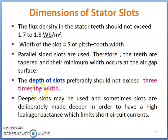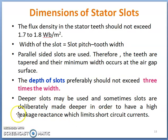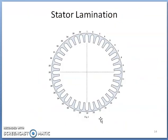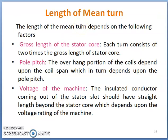The depth of the slot should not exceed three times its width. When deeper slots are used, leakage reactance becomes very large, which limits short-circuit current under transient conditions. In the case of salient pole machines, as the internal diameter is quite large, flux density along the depth of the tooth does not vary appreciably, and the width of the tooth may be estimated corresponding to the permissible flux density at the middle section of the tooth, which should not exceed 1.8 Wb/m².